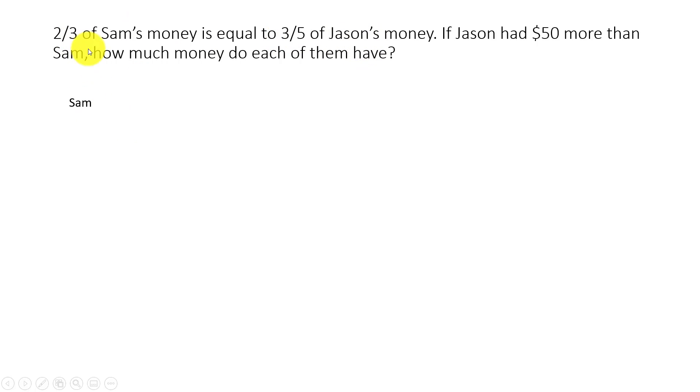Totally Sam has three units. Out of which two units is equal to three units of Jason's money, and Jason would have three units which is equal to the two units of Sam's money. Basically, two units of Sam's money out of his total of three units.